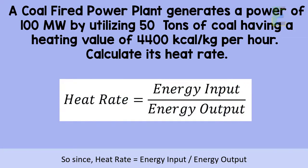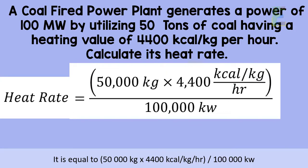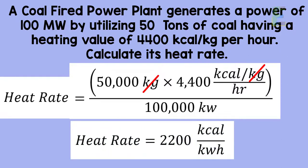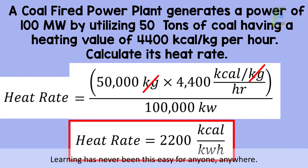Since heat rate is equal to the energy input (heat energy input) over energy output (power generated), it is equal to 50,000 kilograms times 4400 kilocalories per kilogram per hour, over 100,000 kilowatts, which gives us a final answer of 2200 kilocalories per kilowatt hour. So that's it! This is Earth Fan — learning has never been this easy for anyone, anywhere.